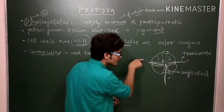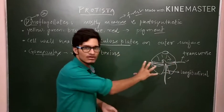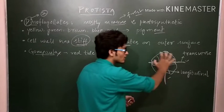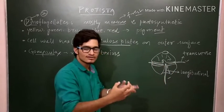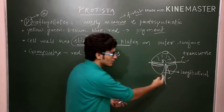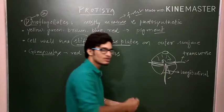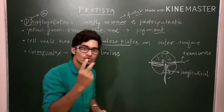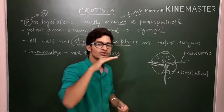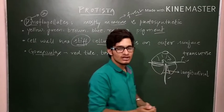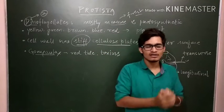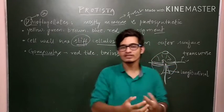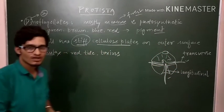So this is a dinoflagellate - a simple example. You can see the stiff cellulose wall, a stiff outer covering. Under that there are different kinds of grooves, and in those grooves there are flagella. Two flagella - one is longitudinal, the next one is transverse. And due to these two flagella, the organisms are termed dinoflagellates, because Di means two and flagellates simply means flagella.